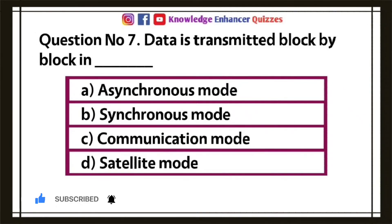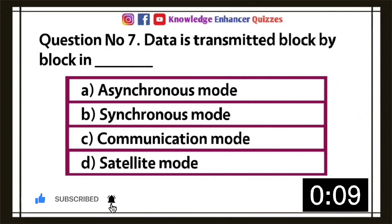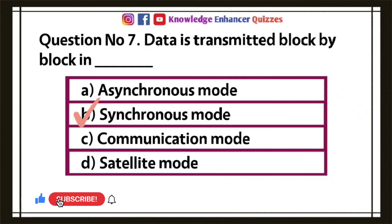Question number seven, data is transmitted block by block in: A, asynchronous mode; B, synchronous mode; C, communication mode; D, satellite mode. Option B is the right answer.